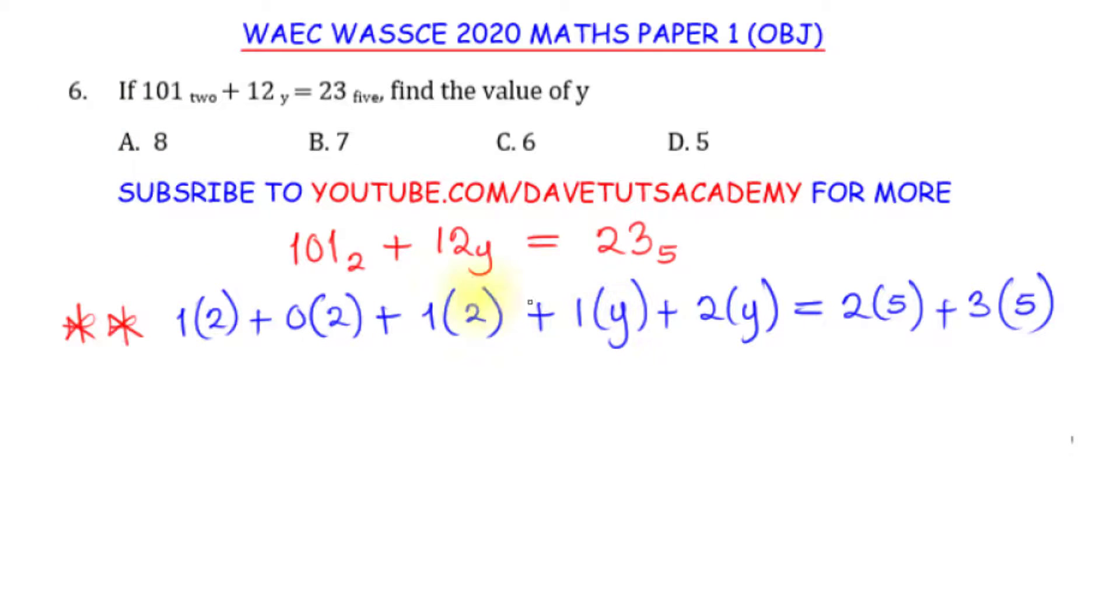Alright so what we now need to do is, look at 101 to base 2. We start from the right hand side, 1 on the right hand side, and we multiply it by that base, but now we take it in increasing raise power. Like in this case, you have 2 raised to power 0, for this one we have 2 raised to power 1, for this one we have 2 raised to power 2.